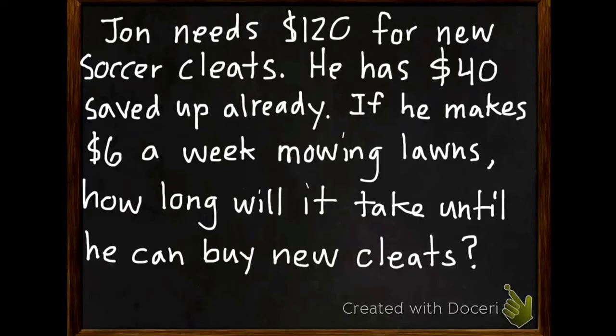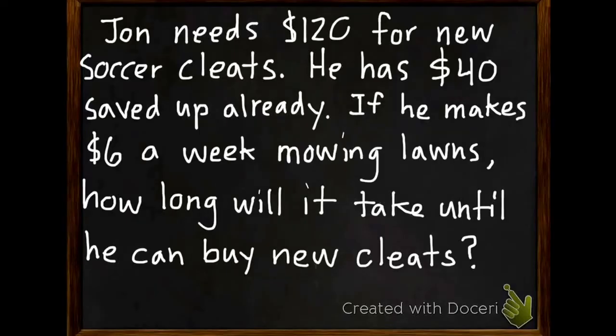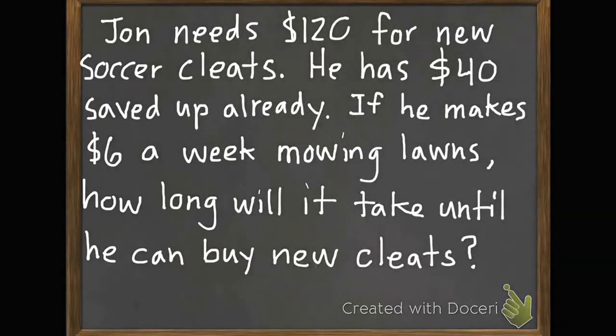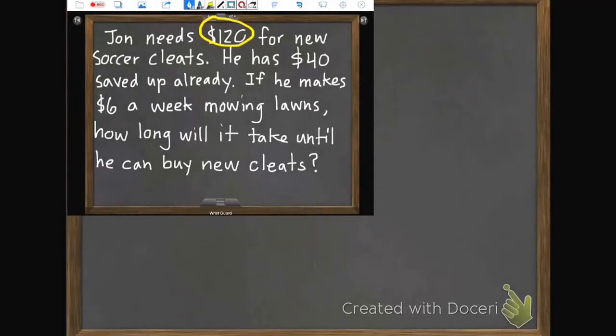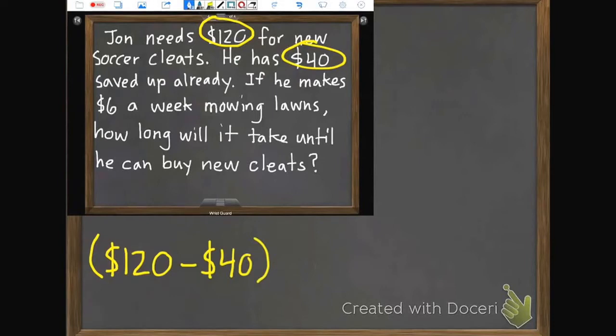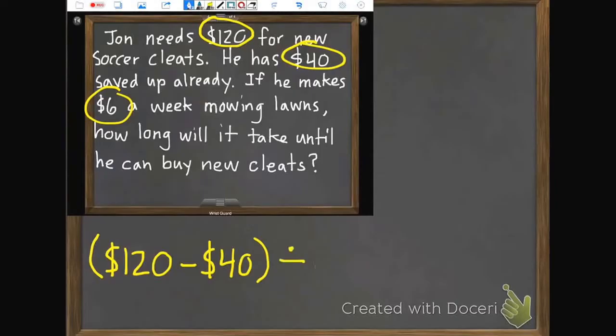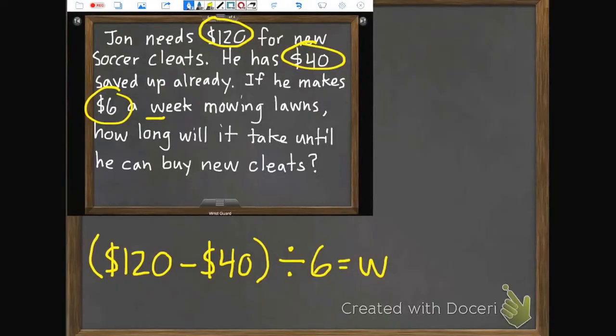First of all, John should probably charge a little bit more, and this would speed up the process a little bit. Or maybe go for some cheaper cleats. But if that's how much he's charging, and that's how much he needs to make, let's figure this out. So John needs $120. He has $40. So those are the things we have at first. He needs $120. And he already has $40. Next, we know he makes $6 a week. So whatever amount he needs, we're going to divide by 6. And that's going to tell us the weeks. So I'm using a W for my variable.